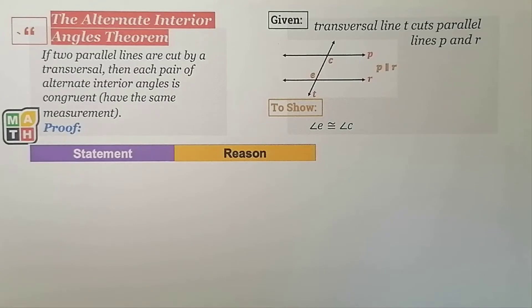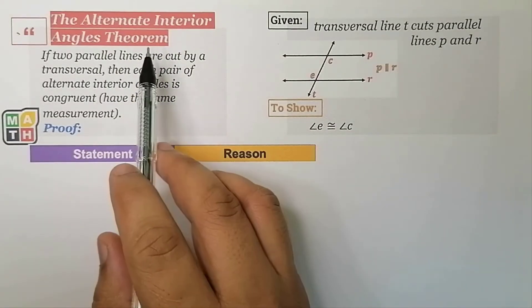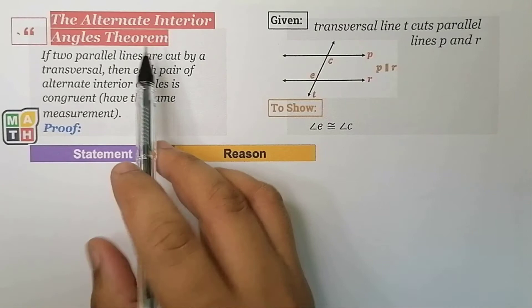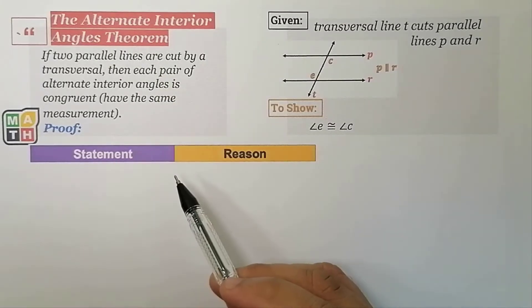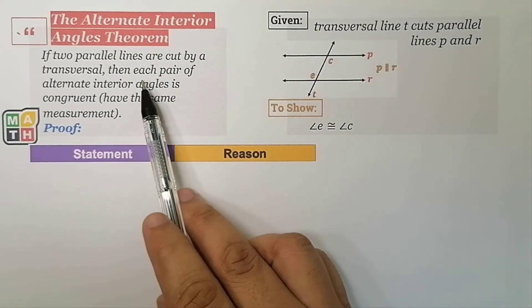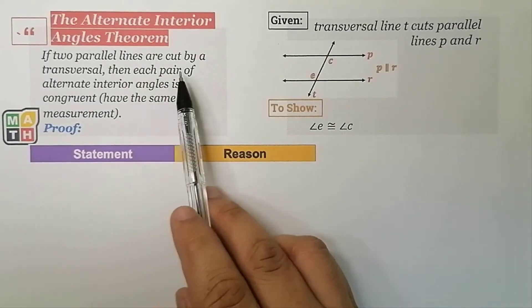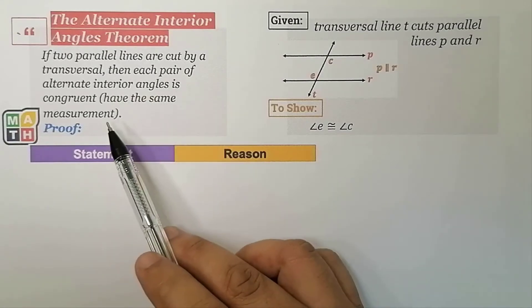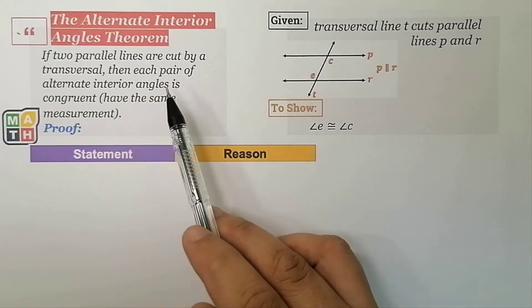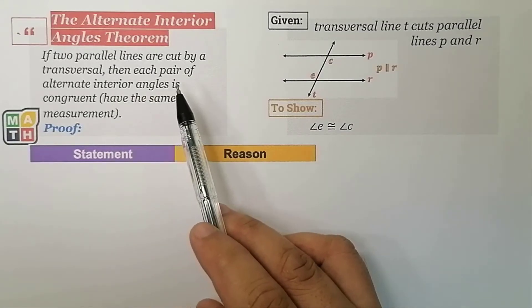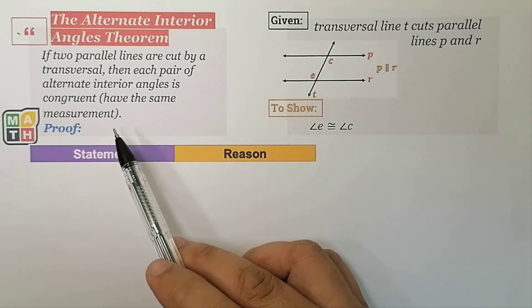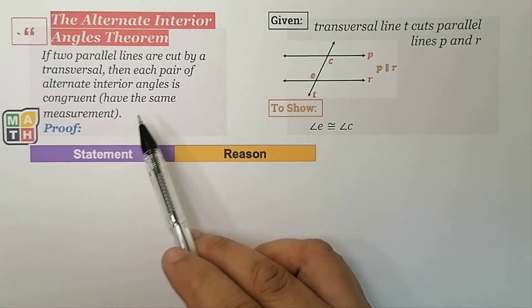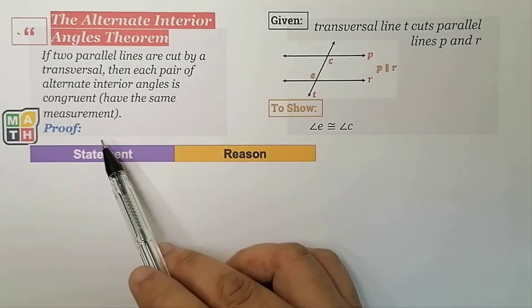Hello, everyone! For this video, we are going to prove the Alternate Interior Angles Theorem. This theorem tells us that if two parallel lines are cut by a transversal, then each pair of Alternate Interior Angles is congruent, or in other words, they have the same measurement.